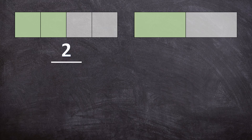Now let's write down the colored fraction for each of these shapes. The first one: two out of four is colored, and for the second shape one out of two parts is colored. Now can you see that the colored in parts for both of these shapes is exactly the same size?